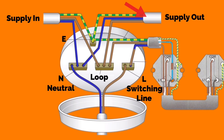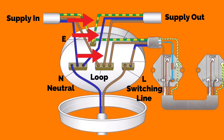The cable in the top right now goes into another room and repeats the process again. It takes a permanent line, neutral, and circuit protective conductor into the next ceiling rose, terminated in the loop terminal for the line, the neutral terminal, and the earth terminal within the accessory, and the process is repeated again.